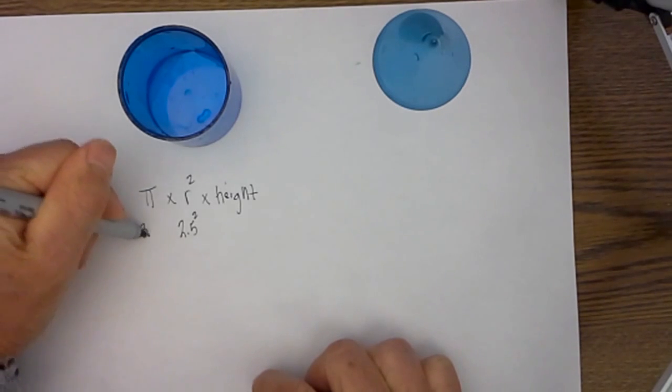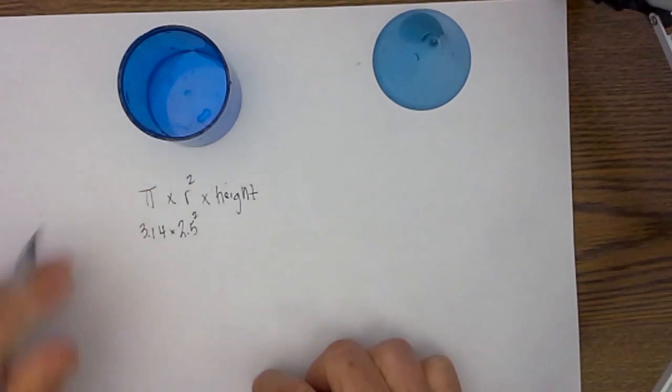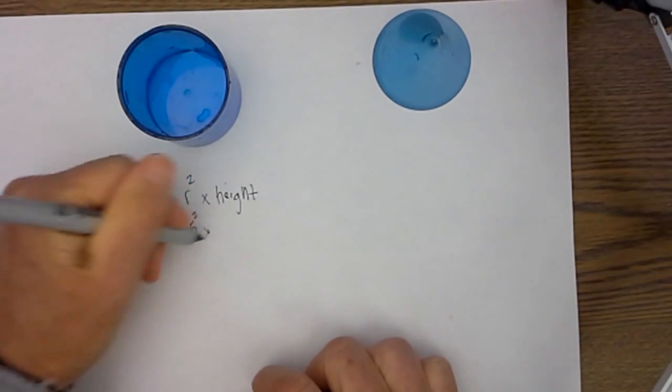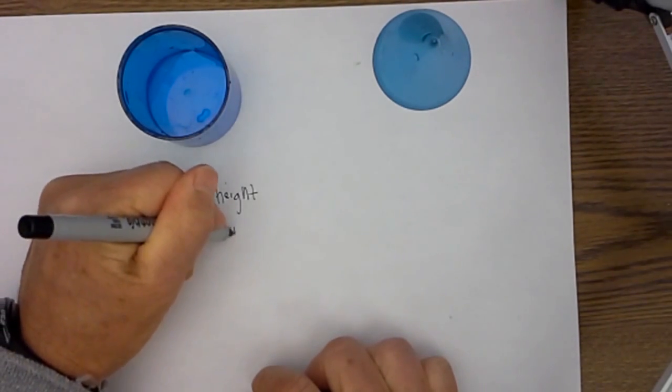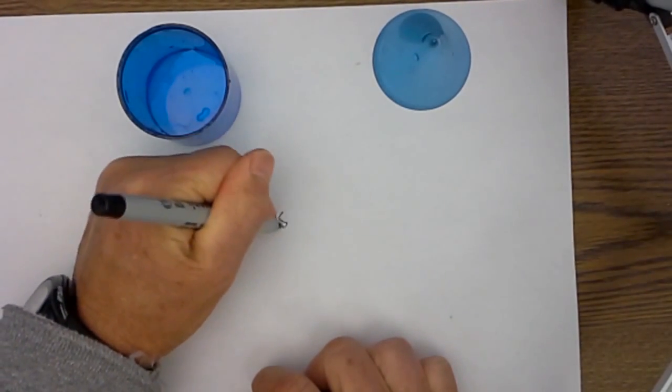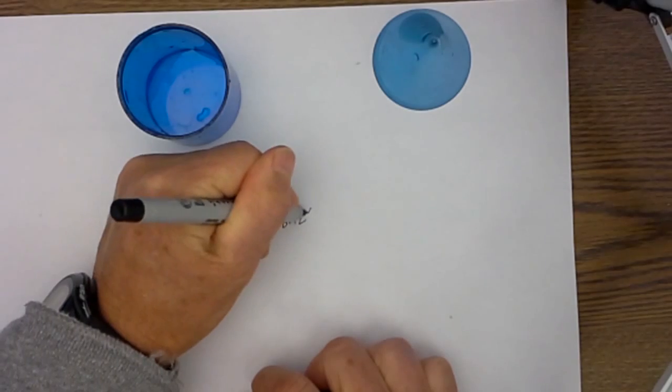I will use 3.14 to represent pi and then in addition the height I measured from here to here and that gave me the height was 5 centimeters. When I multiplied all of this I got 98.125 centimeters cubed.